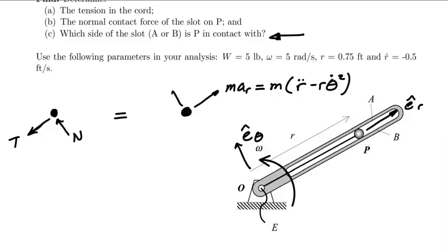And I'm going to have an M a_theta, which again, if you recall, is equal to M times quantity 2 R dot theta dot plus R times theta double dot.